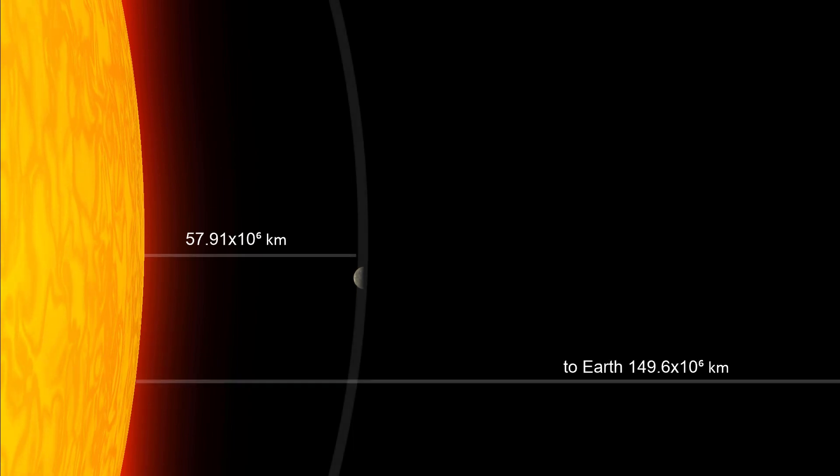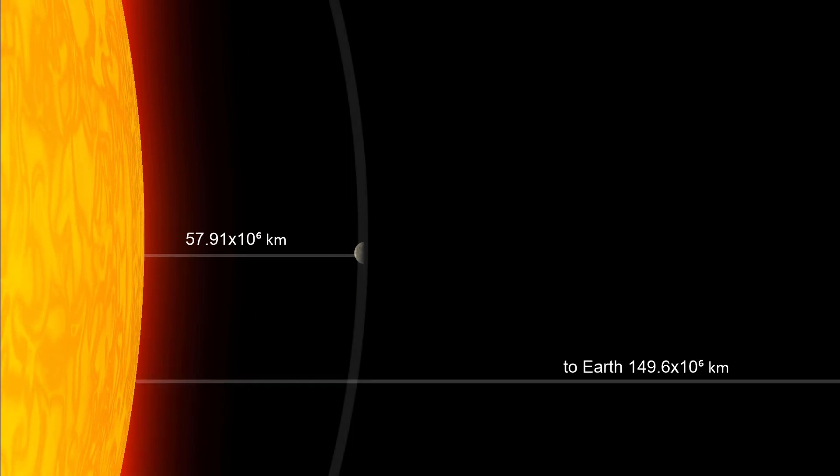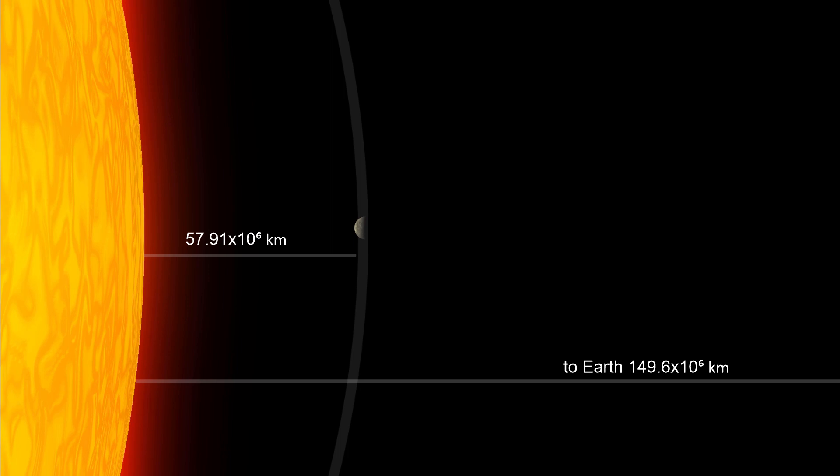I'll do a video on the Parker Solar Probe in the future. In any event, heat is not the real issue. The issue is the mass of the Sun. Actually, the issue is the gravity caused by the mass of the Sun. At the distance of Mercury's orbit, the acceleration caused by the Sun is 6.7 times stronger than at the distance of Earth's orbit.